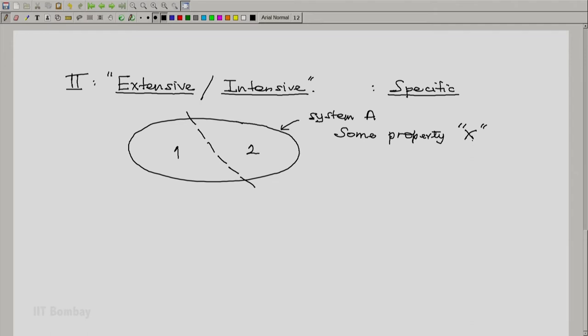This property X when measured for system A has the value X. But when measured for this part of the system, system 1, let the value of the property be X1. And when it is measured for this part of the system, let the value of the property be X2. Now using X, X1, and X2, let us define extensive and intensive as follows.